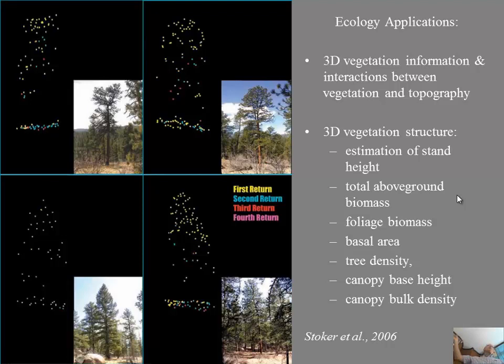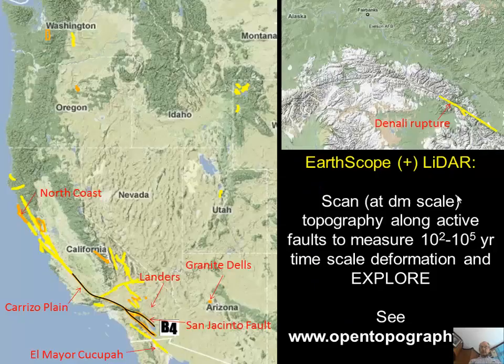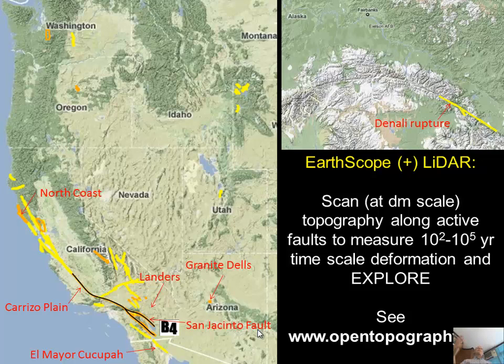Usually, as geologists, we throw away the vegetation. But ecologists throw away the ground. So we can use the data together. One thing done in North America is scanning many active faults in Western North America with laser scanning, and these data are freely available. One site is a project called Open Topography, where you can go and get your own data to study and play with. Someday, maybe we can put some Indonesian LiDAR data in here, when you're ready to give it away after studying. This is our culture — to make it as available as possible so everyone can use it.